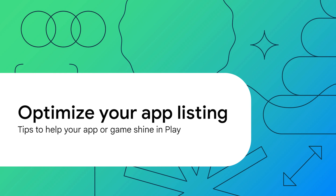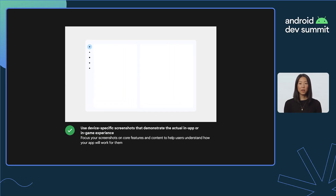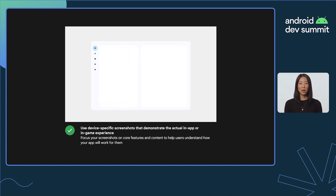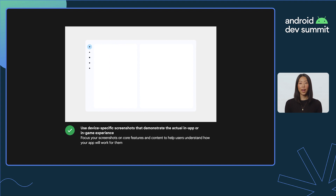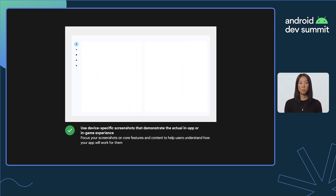These changes will make your app assets much more prominent, both on large screens and on phones. So let's walk through some best practices to help you optimize your store listing. You can help set user expectations for how apps will work on their devices by uploading separate screenshots for each device type. Since you can only select up to eight screenshots per device type, make sure to choose ones that demonstrate the actual in-app experience. Focus on core features and content so users can anticipate what the app or game will be like.